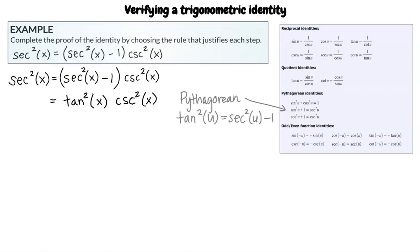Using the second identity listed, we can subtract 1 from both sides of the equation to get tangent squared of u equals secant squared of u minus 1. This clarifies why this substitution was made for the first step.